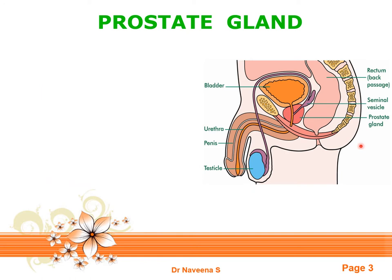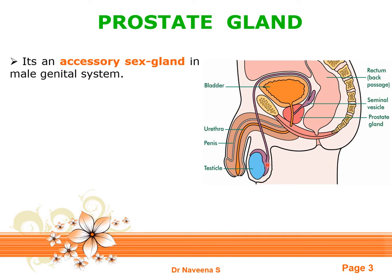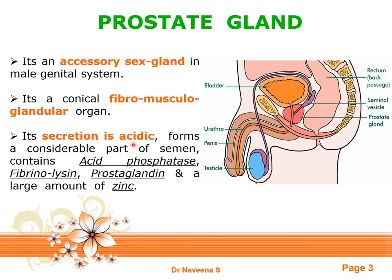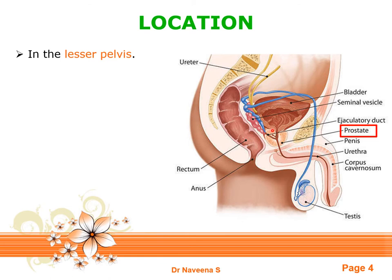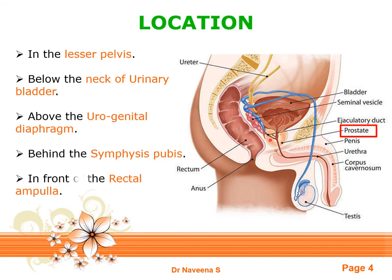The prostate gland is an accessory sex gland in the male genital system, along with the epididymis, vas deferens, and seminal vesicles. It is a conical-shaped fibromusculoglandular organ. Its secretions are acidic and form a major portion of semen, including acid phosphatase, fibrinolysin, prostaglandins, and a large amount of zinc. The gland is located within the lesser pelvis, lying below the neck of the urinary bladder, above the urogenital diaphragm, behind the pubic symphysis, and in front of the rectal ampulla.